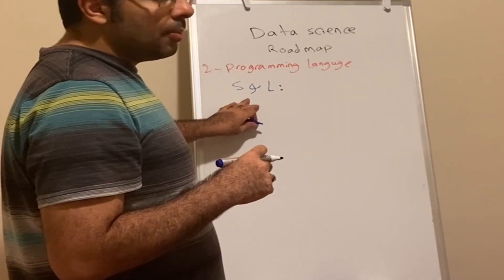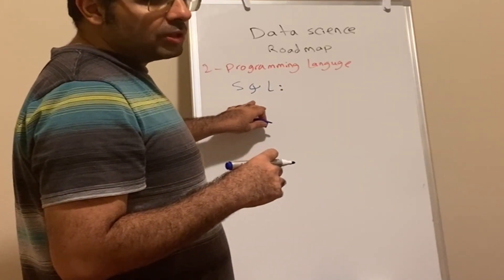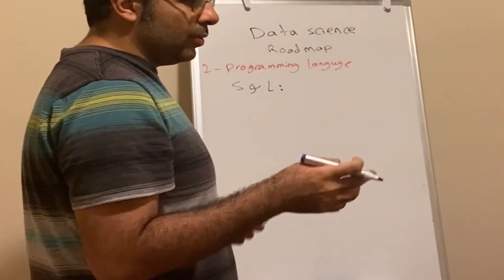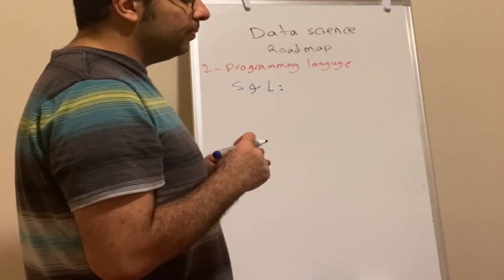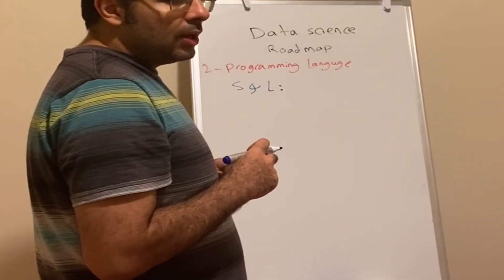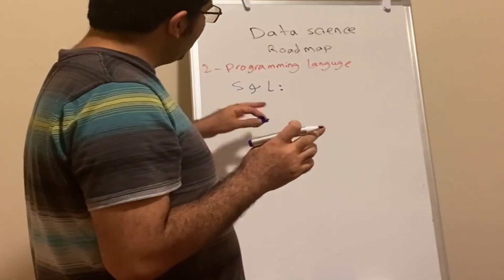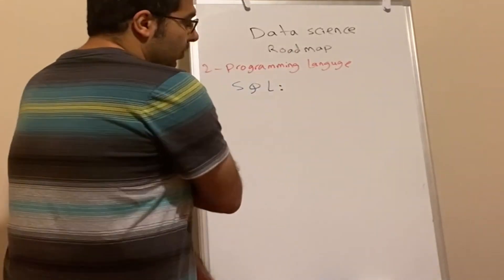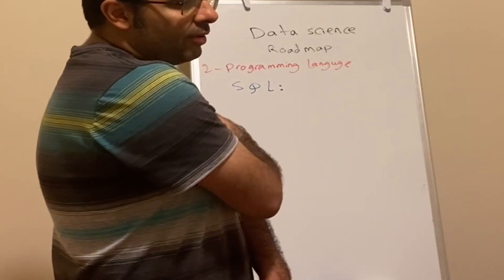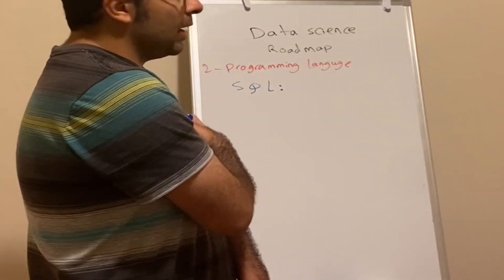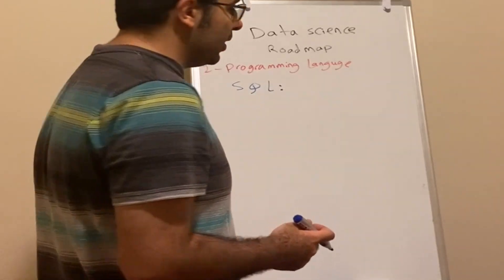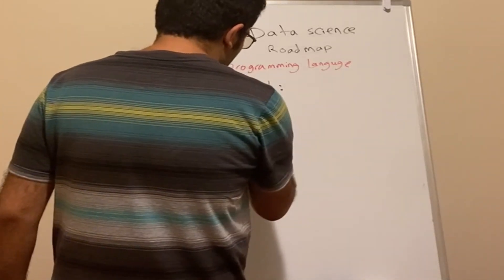Here, data is going to be in some sort of relational or non-relational databases. For relational, let's learn SQL. That's the most dominant language to pull data from databases. It's the number one choice. Most industries still use SQL or variations of SQL - either SQL Server, Amazon Redshift, MySQL, Snowflake - some variation of this.